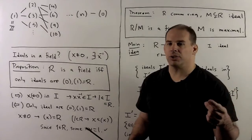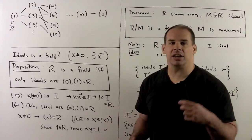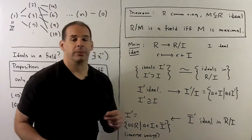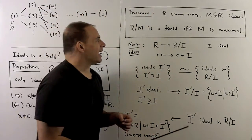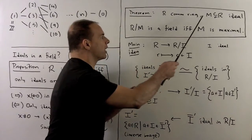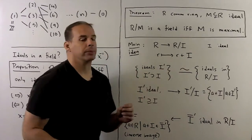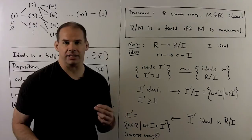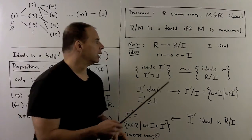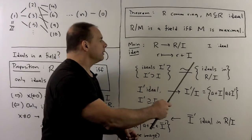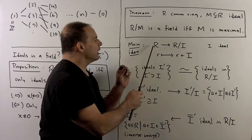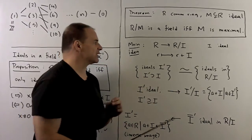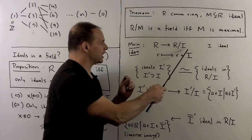With maximal ideals, we can use this proposition to get a construction for fields. The theorem is: R is a commutative ring, M is a proper ideal in R (so M is not equal to R). Then the quotient ring R mod M is a field if and only if M is a maximal ideal. The main idea uses the quotient mapping carrying a ring to the quotient ring R mod I, where I is an ideal — this map sends each element r to its coset.